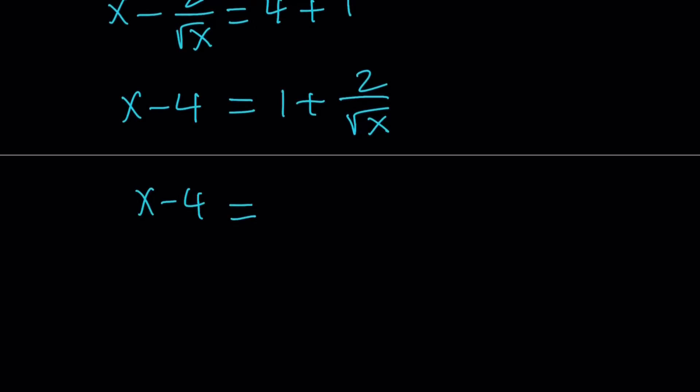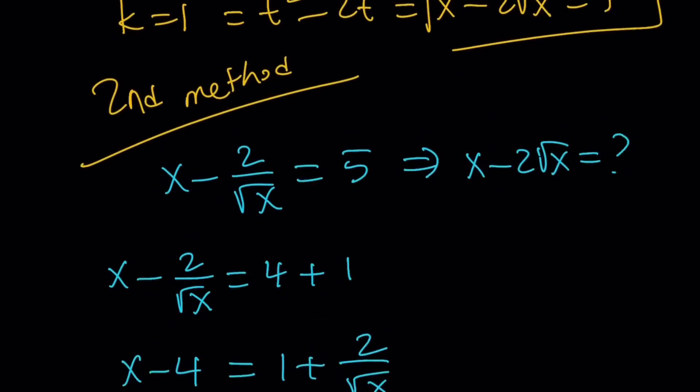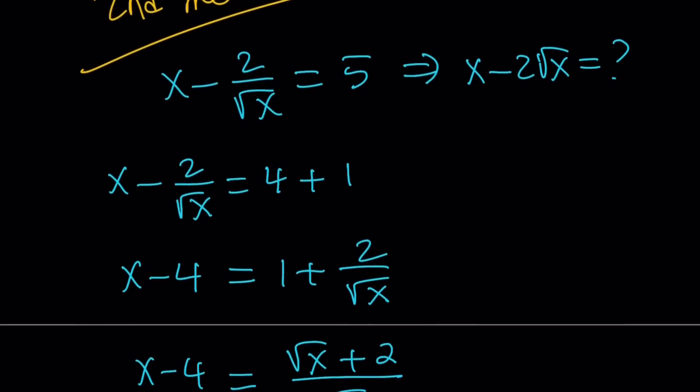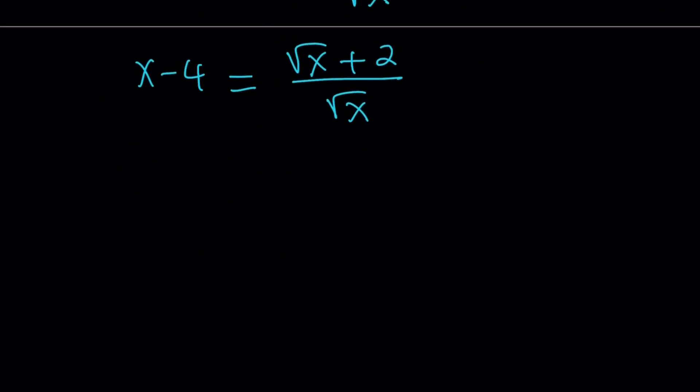Now, make a common denominator on the right-hand side. That's going to give you square root of x plus 2 over square root of x. And remember, we are looking for the value of x minus 2 square root of x. And what is that supposed to mean? I mean, how can I find it from there? Keep watching. You'll see how it goes.